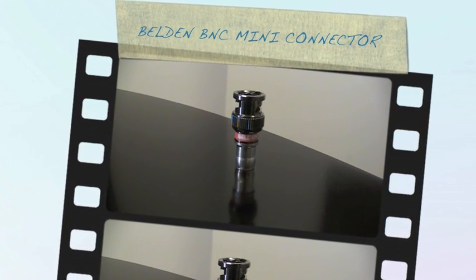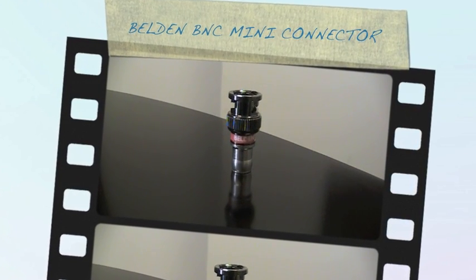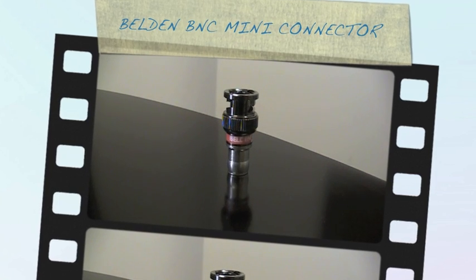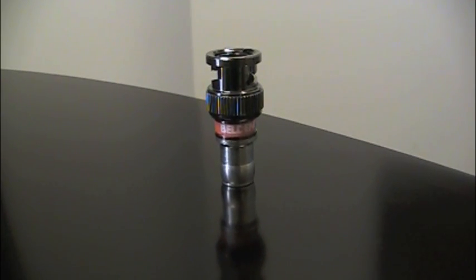Now we're going to show you how to terminate Belden's mini RGB cable, which also has the code number 1279P, with a BNC connector.